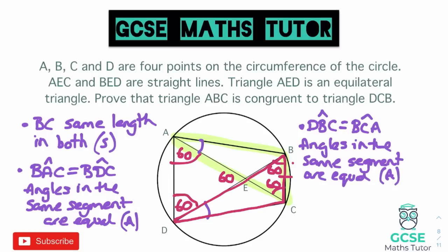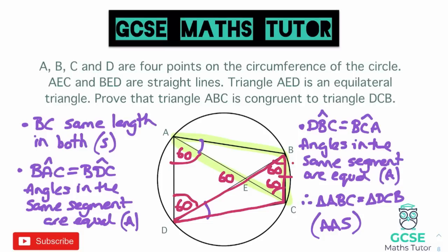We now have two angles and a side. Even though the side is not directly between both angles, if two angles are equal the third must be also, so the side will be between equivalent angles. We can state this as an AAS triangle. Therefore, triangle ABC is congruent to triangle DCB by AAS.